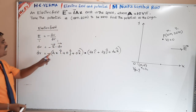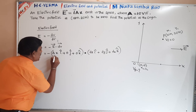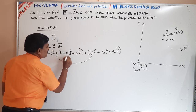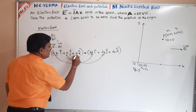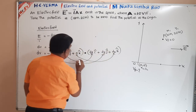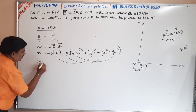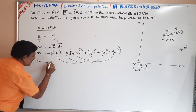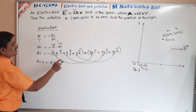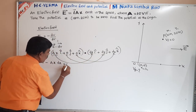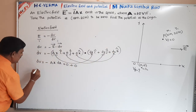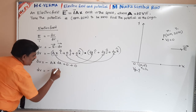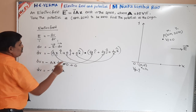Now taking the dot product: the coefficient of î is multiplied with coefficient of î, coefficient of ĵ with ĵ, and coefficient of k̂ with k̂. So dV equals minus Ax·dx, and the terms with 0 into dy and 0 into dz vanish. dV equals minus A times x¹ dx.